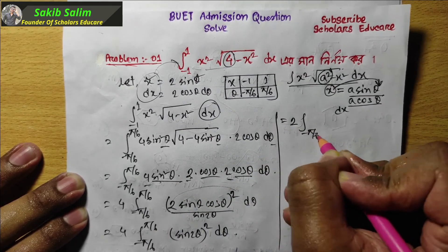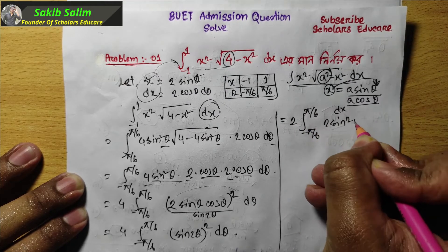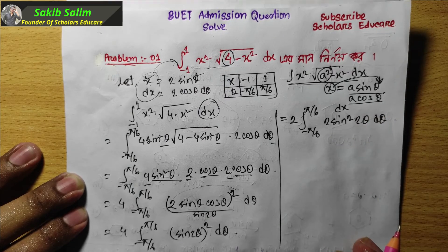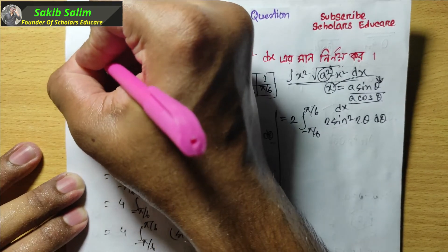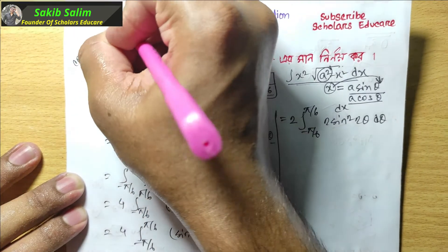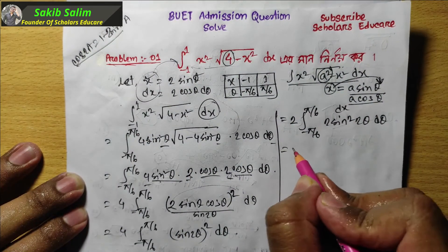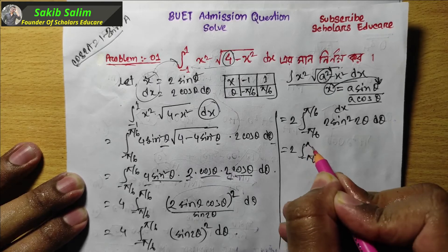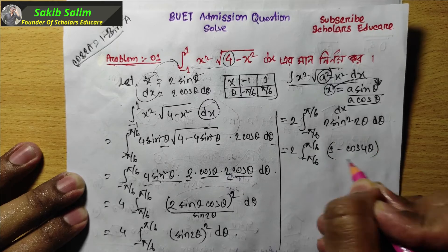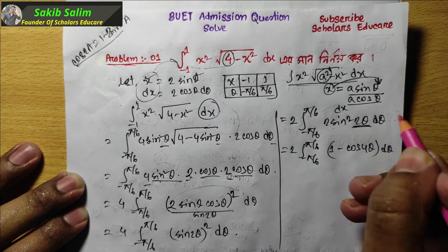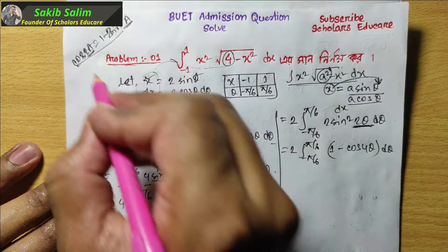With limits from minus pi by 6 to pi by 6, we have sin 2 theta d theta. Applying the identity cos 2a equals 1 minus 2 sin squared a, and then cos 4 theta equals 1 minus 2 sin squared 2 theta, we write the integrand as 2 times the integral from minus pi by 6 to pi by 6 of 1 minus cos 4 theta d theta. Because we substitute 2 theta and then 4 theta as we apply the identity.